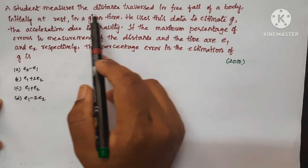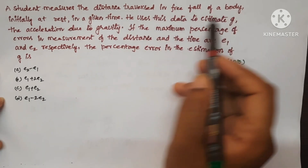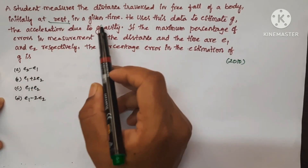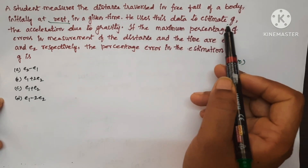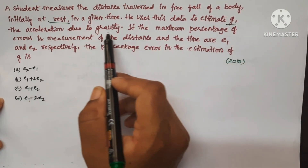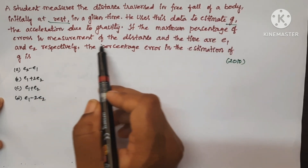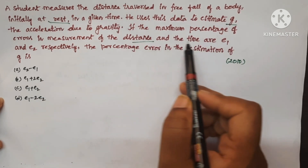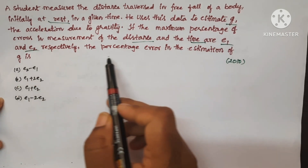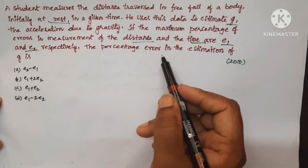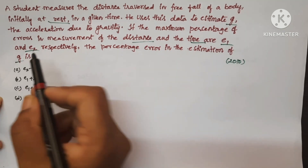A student measures the distance travelled in free fall of a body initially at rest in a given time. He uses the data to estimate G, the acceleration due to gravity. If the maximum percentage of error in measurement of the distance and the time are E1 and E2 respectively, the percentage error in the estimation of G is...